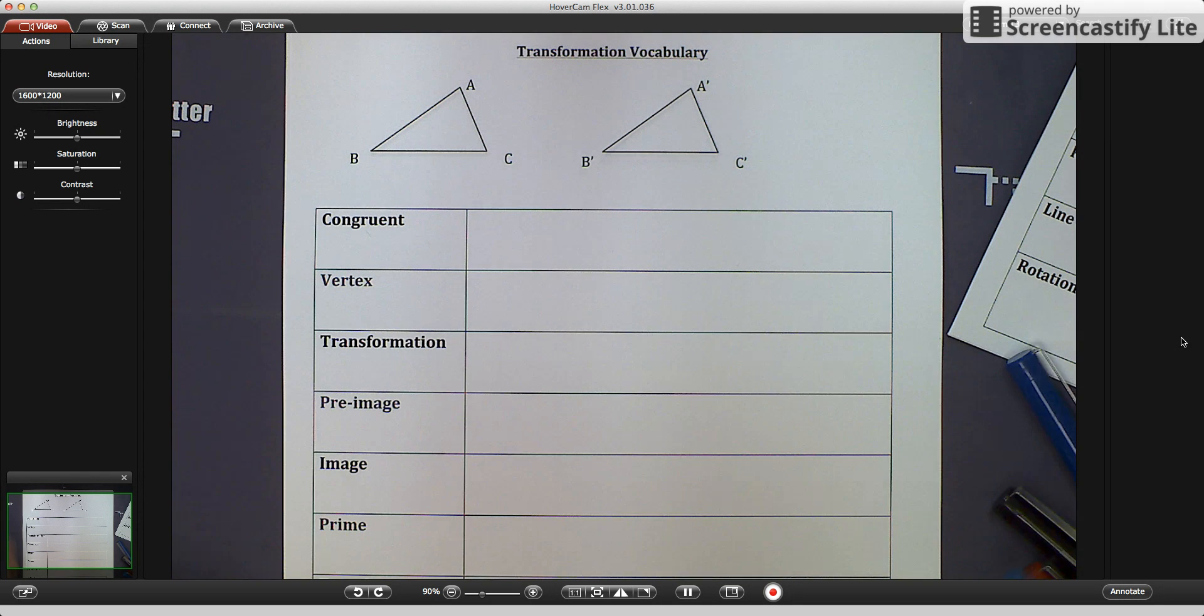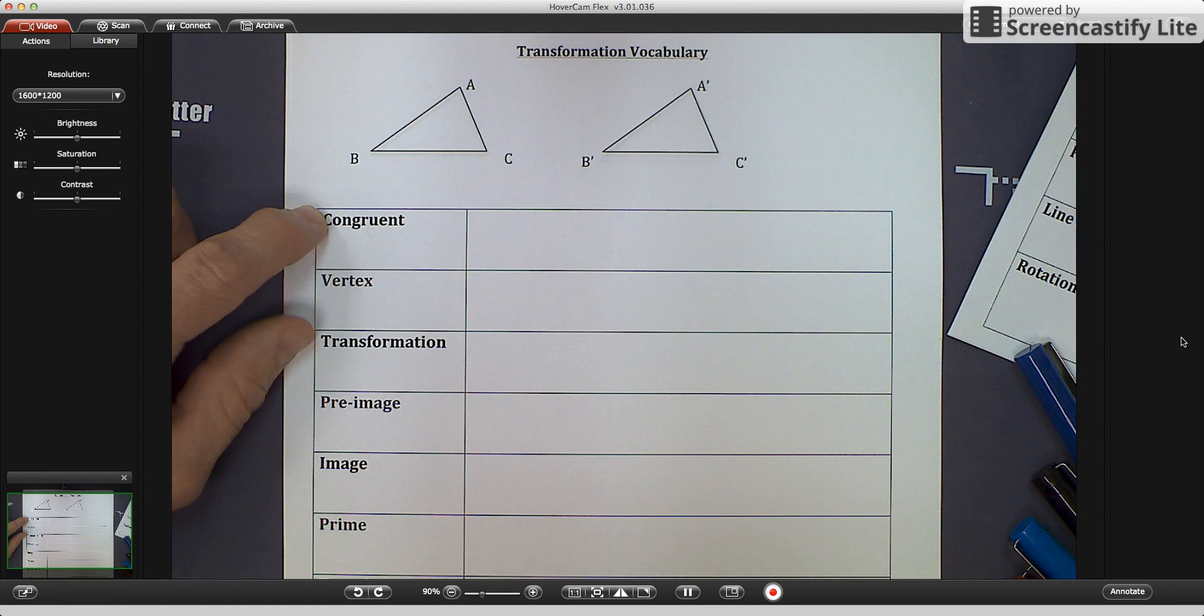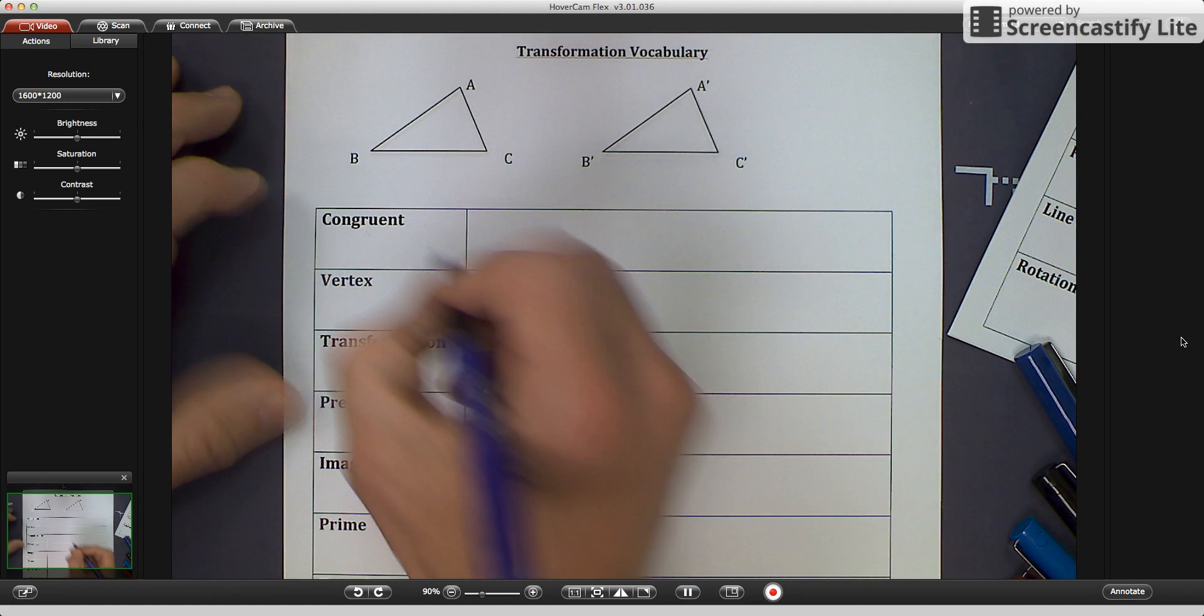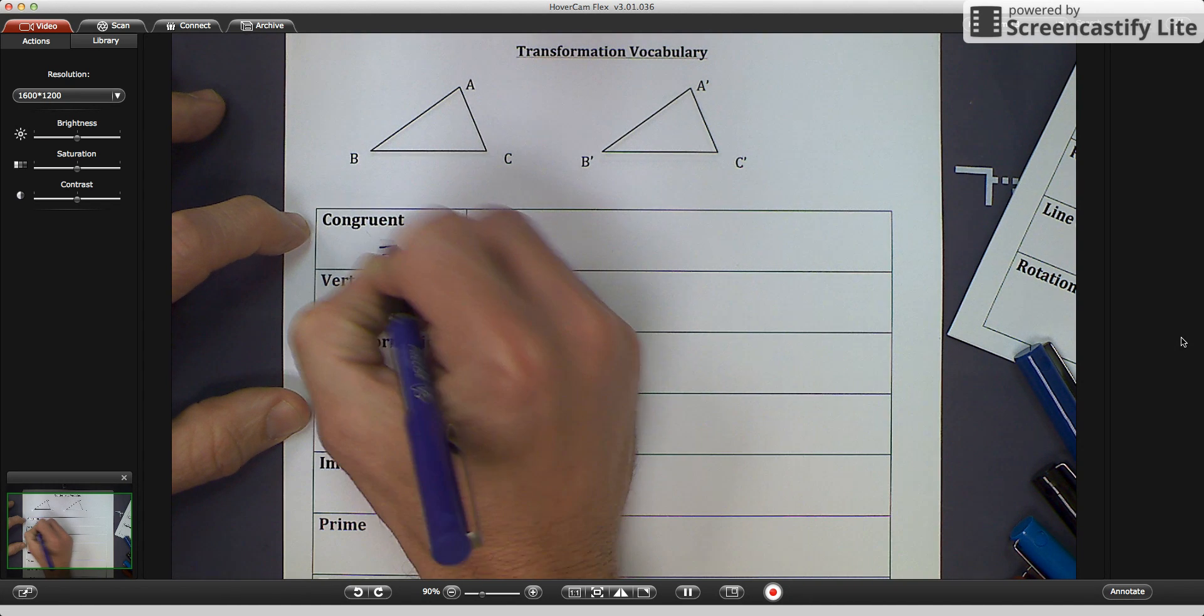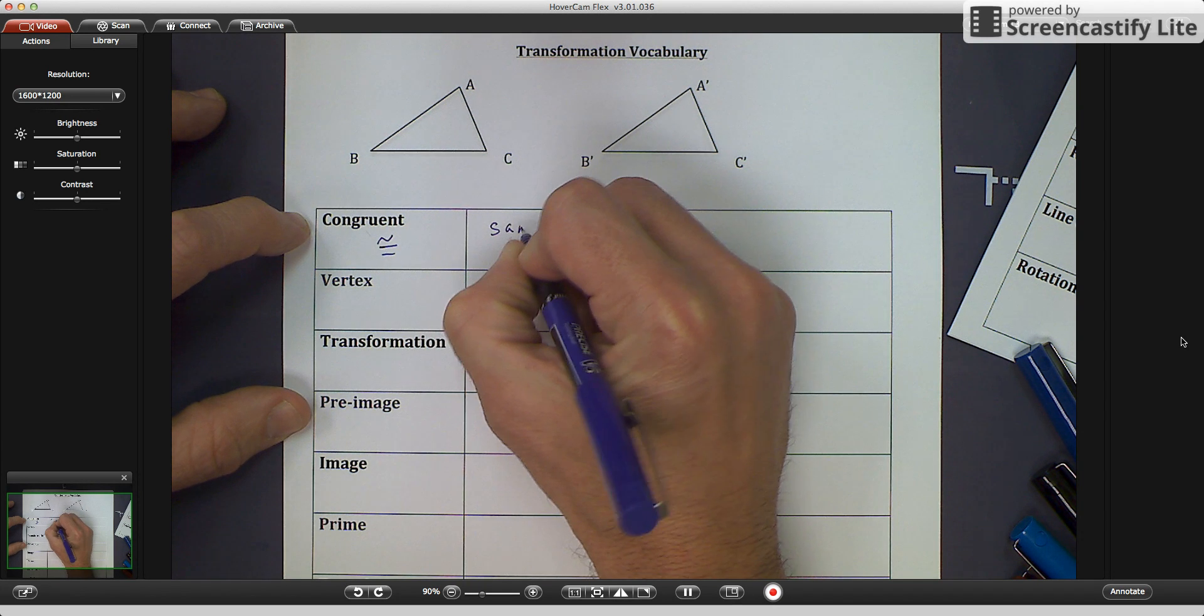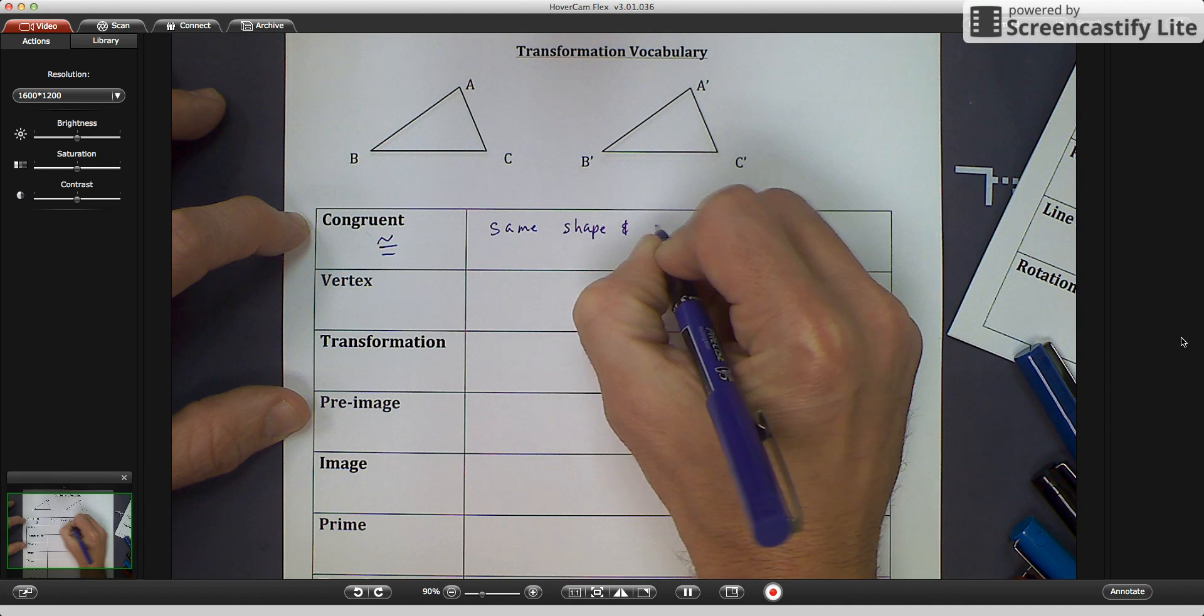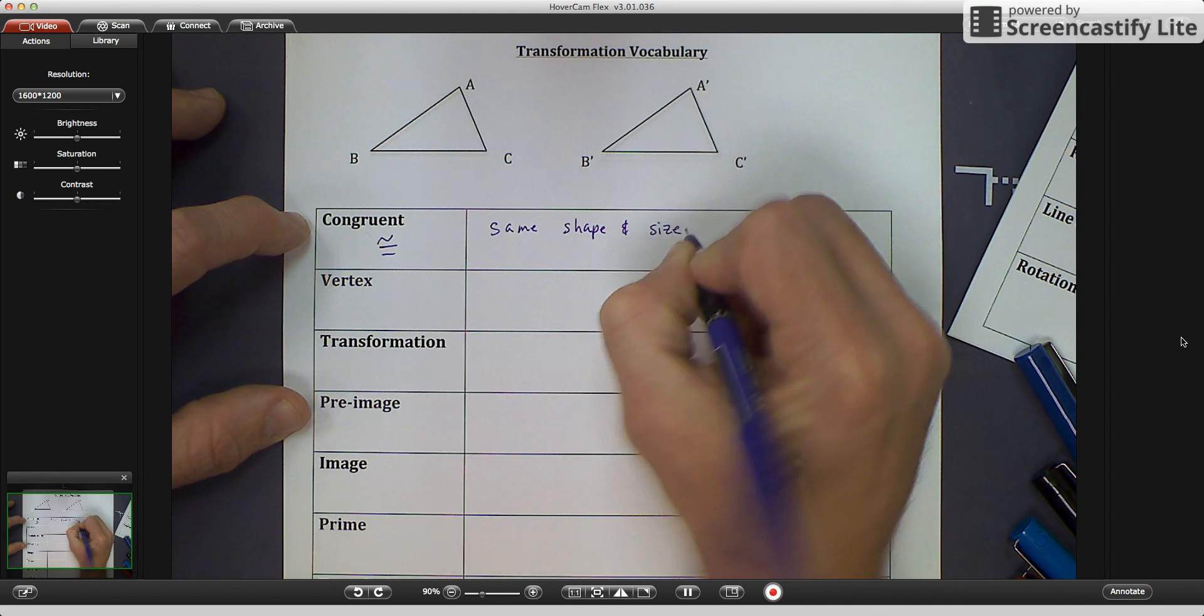We have some vocabulary terms that we already have learned the definitions of, so we're going to review them. And you'll see that we have two triangles up top that look the same, and we're going to talk about those. Let's get started. So congruent, the symbol for congruent was the equal sign with a squiggly over top of it, and the definition is same shape and size.